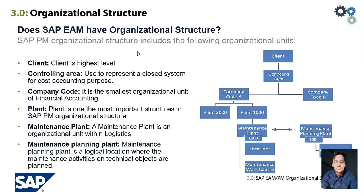First, we have the client, which is the highest level unit. Second, we have the controlling area, which is used to represent a closed system for cost accounting purposes. Third is the company code, which is the smallest org unit of financial accounting. Fourth is the plant, which is one of the most important structures in EAM.